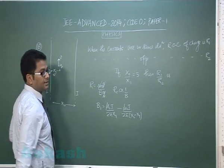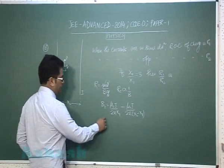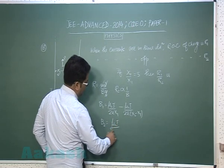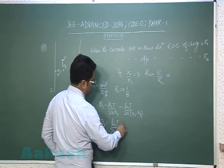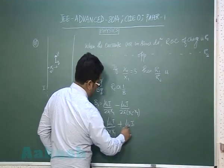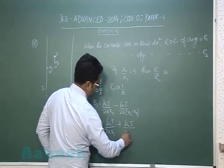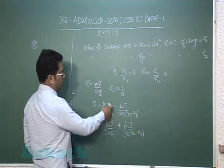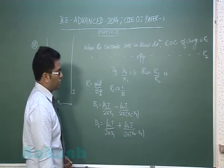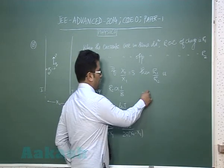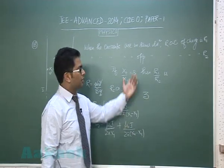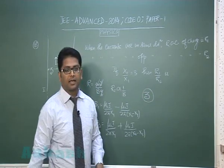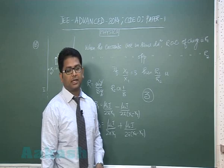Likewise B_2 is when the currents are in opposite direction, so the field would be added. Plugging this value and putting in the ratio you would get the ratio is 3 is to 1 and R_1 by R_2 would again be 3. Now let's move to question number 19.